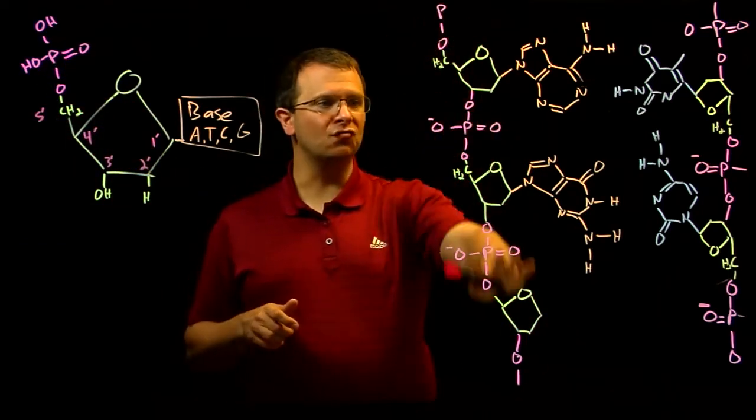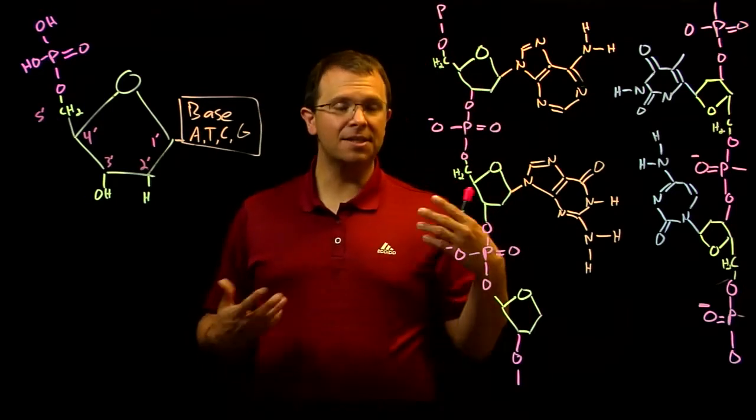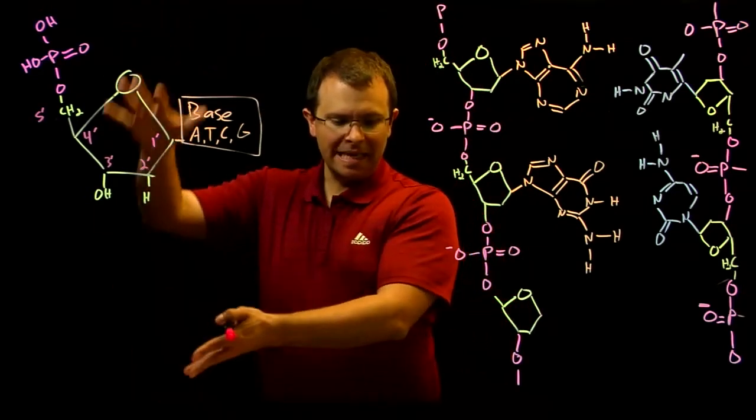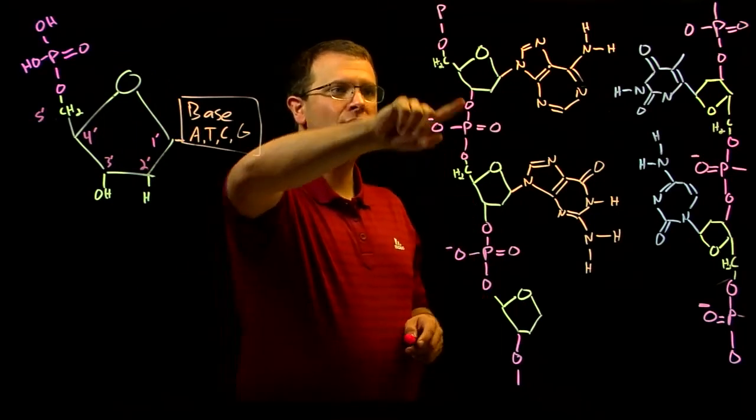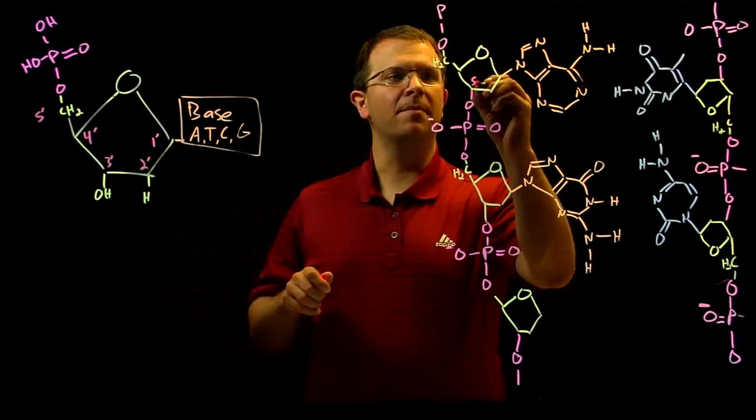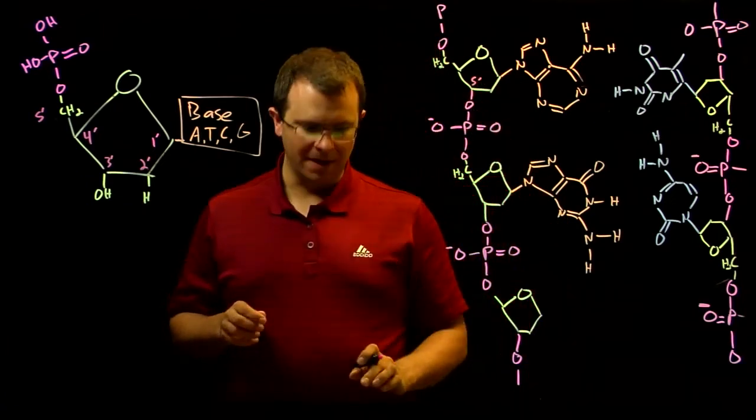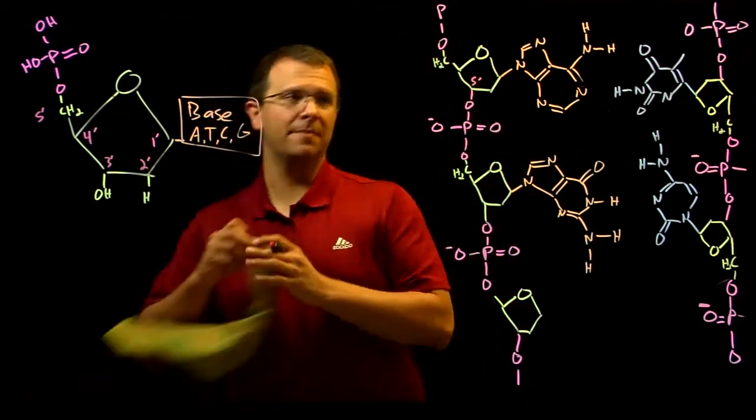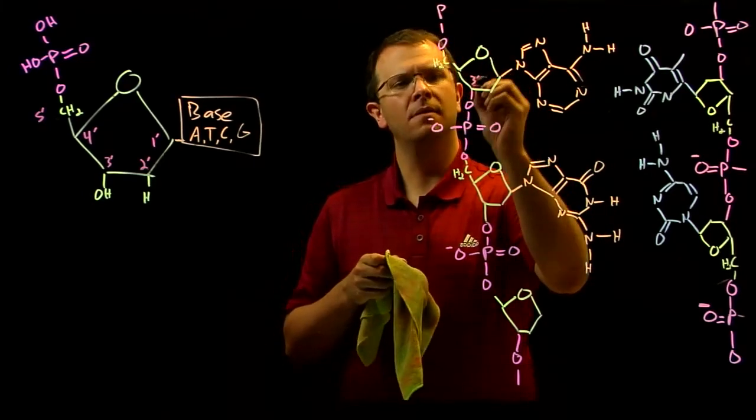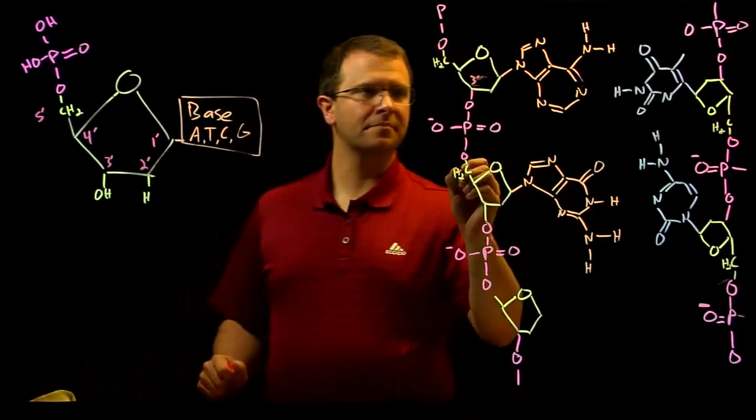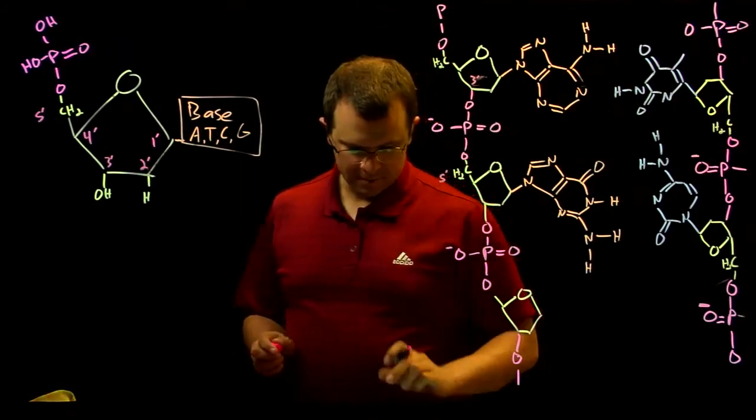A strand of DNA is constructed by linking together the phosphate of one nucleotide to the five-prime carbon of another one, excuse me, not the five-prime carbon, the three-prime carbon of another one. This one is the five-prime carbon.